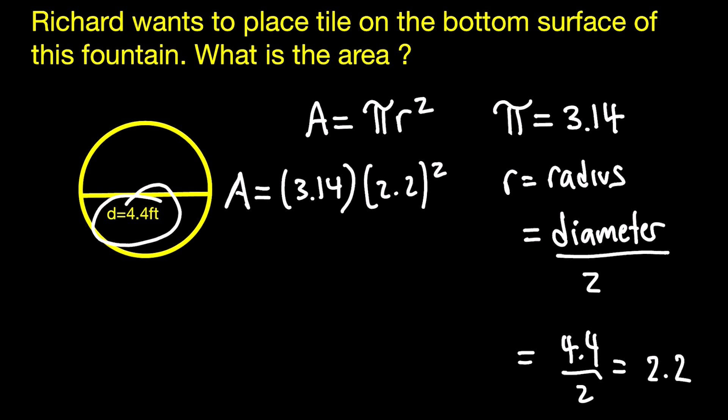And remember that by the law of order of operations, we're always going to get the answer for the exponents first. So 2.2 raised to the second power is 4.84.